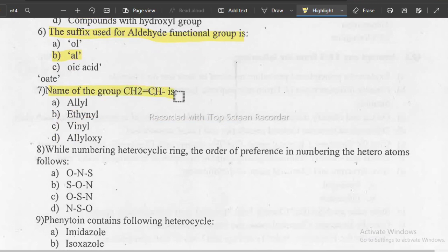Next question: name the group of CH2 double bond CH. You have to tell the group name. As you can see here, there are two answers - vinyl and ethanol. Remember the answer is vinyl.